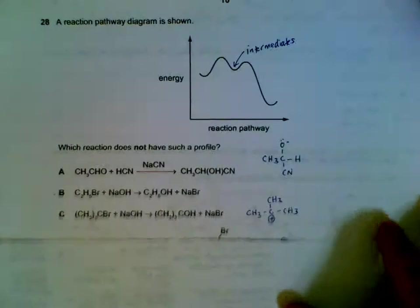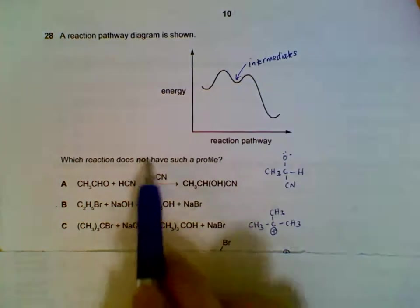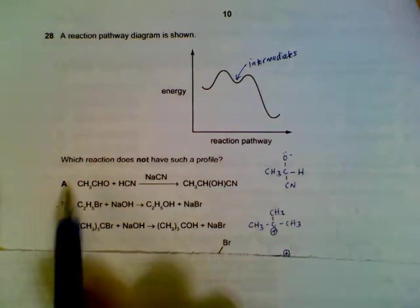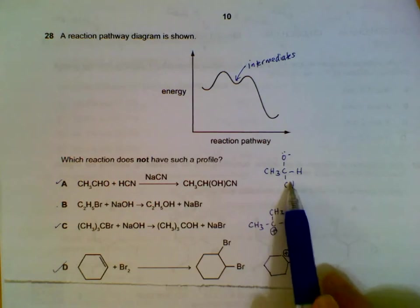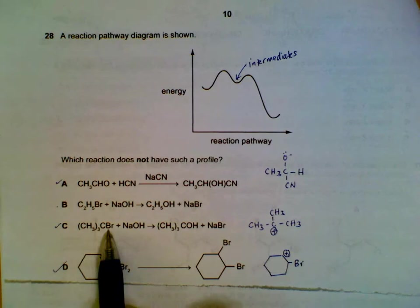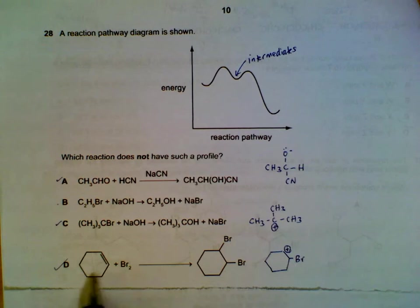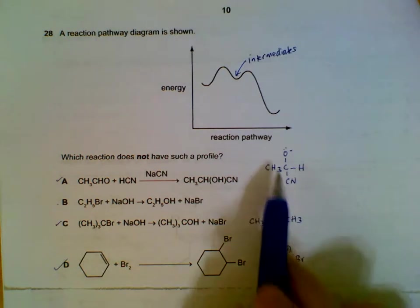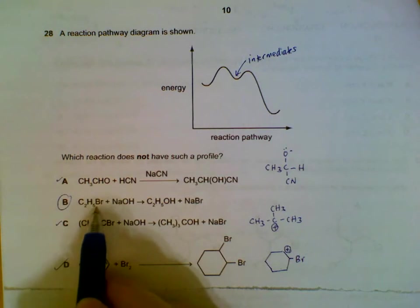Question 28: this energy profile shows that there's an intermediate. So which one does not have an intermediate? For A, C and D, we have our intermediates which I draw out here. C is a tertiary haloalkane, so it will actually have a carbocation. D, we will also have our intermediate. So A, C and D have intermediates. B will not have an intermediate. It's a primary haloalkane, it will actually have a transition state.